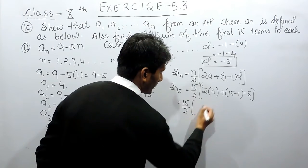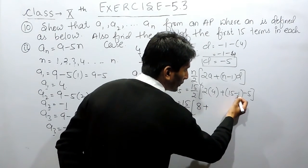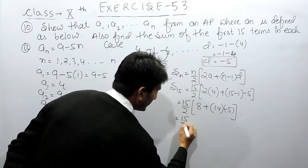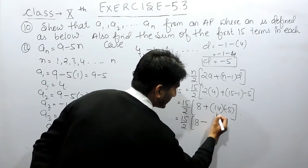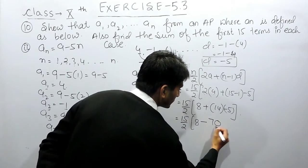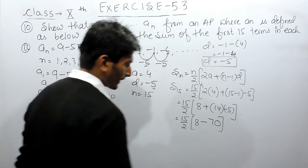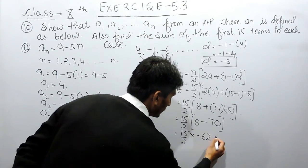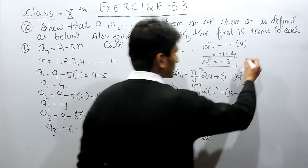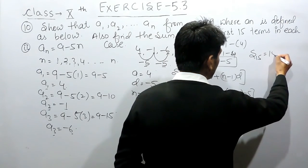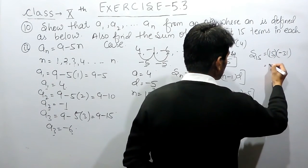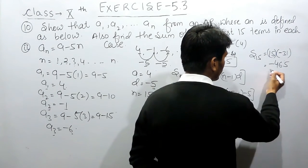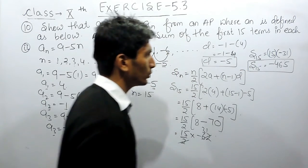So this equals 15 by 2. We get 2 times 4 = 8, and n minus 1 = 14, multiplied by minus 5. So this is 15 by 2 times [8 plus (14 times minus 5)]. 14 into 5 is 70, so this becomes 15 by 2 times (8 minus 70), which is 15 by 2 times minus 62. Dividing 62 by 2 gives 31, so the sum equals 15 multiplied by minus 31, which gives minus 465. So the sum of the first 15 terms of this AP equals minus 465.